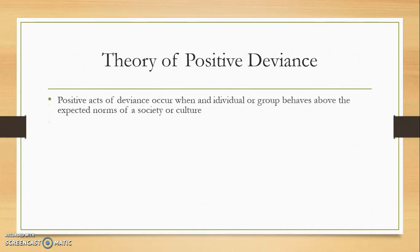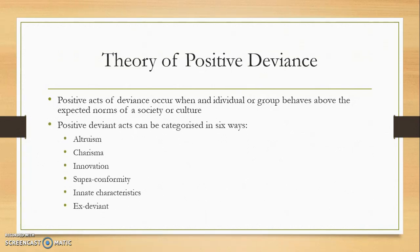Positive acts of deviance occur when an individual or group behaves above the expected norms of a society or culture. The theory suggests that deviant acts can be categorised into five main categories, with a new potential sixth category. The five main ones are: altruism, charisma, innovation, supraconformity, and innate characteristics, with the new category being ex-deviant.